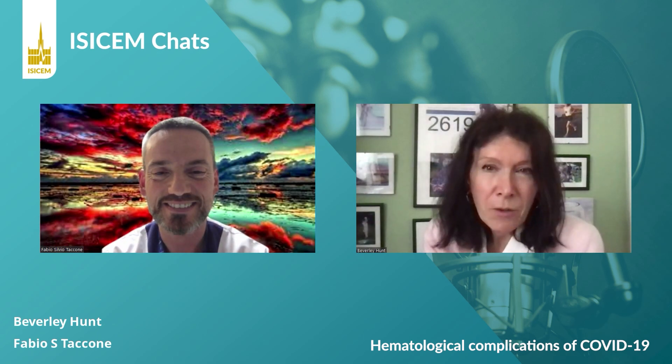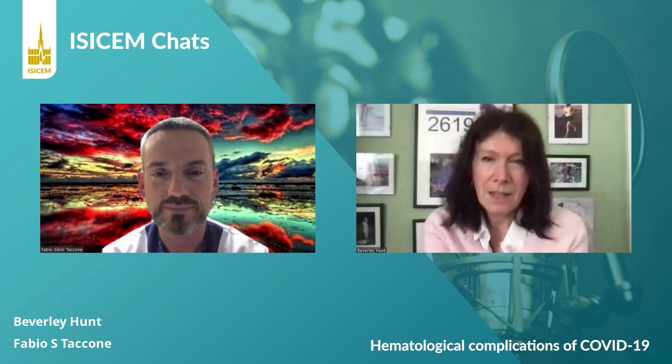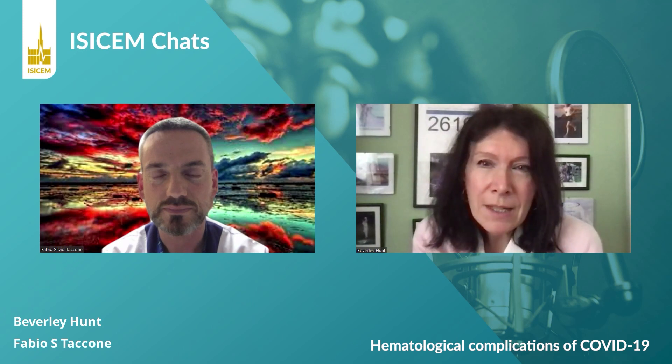We have seen many thrombotic complications in hospitalised patients with COVID-19. We have also seen an increased number of deep vein thrombosis and pulmonary emboli in people who had mild COVID and people in lockdown who took no exercise and are very immobile, suffering from seated immobility syndrome. Coming back to hospitalised COVID, we are talking about patients who are hypoxic and have COVID pneumonia causing an incredible inflammatory response.